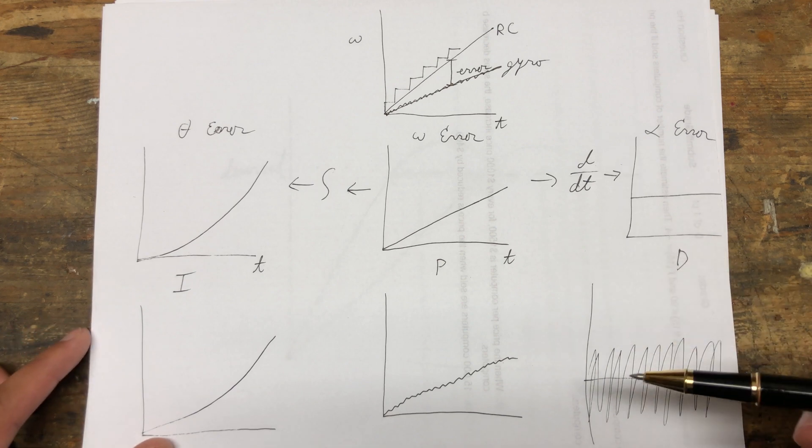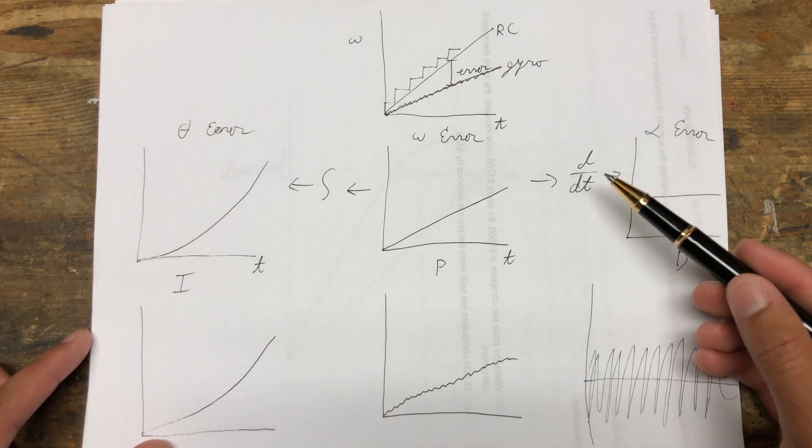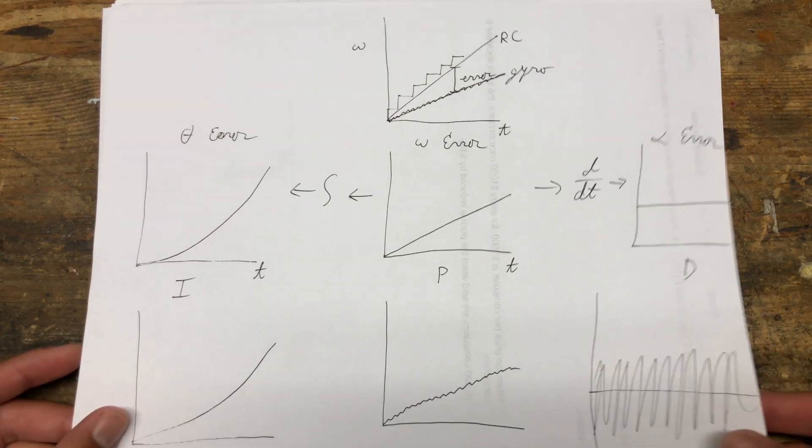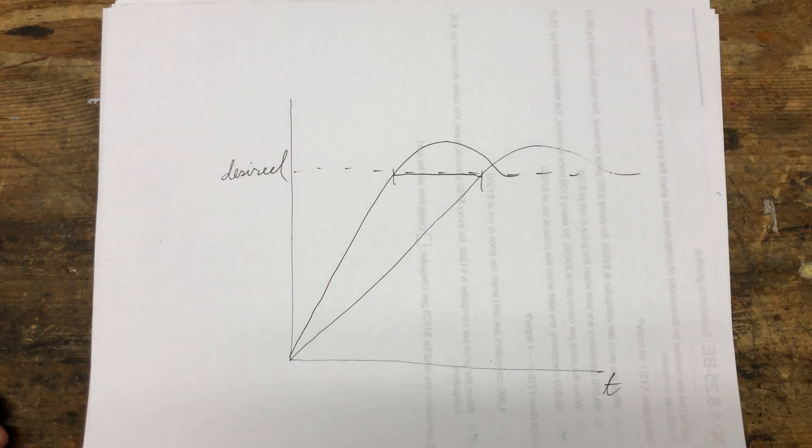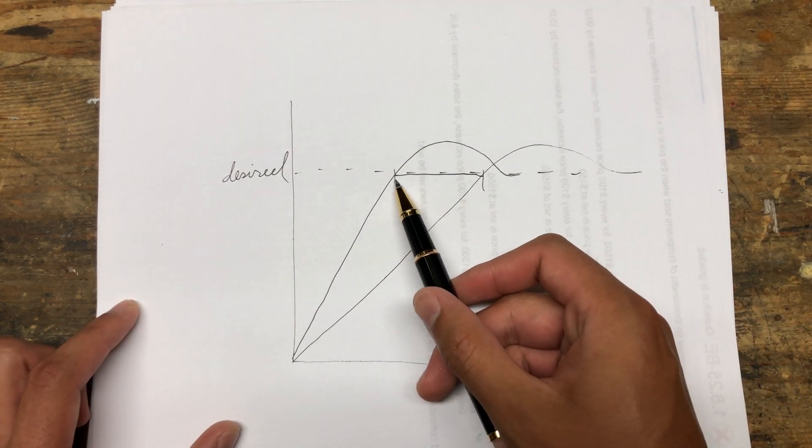In summary, the D-gain can cause hot motors because taking the derivative amplifies noise, but you want to be running the highest D-gain possible in order to get the most responsive drone.